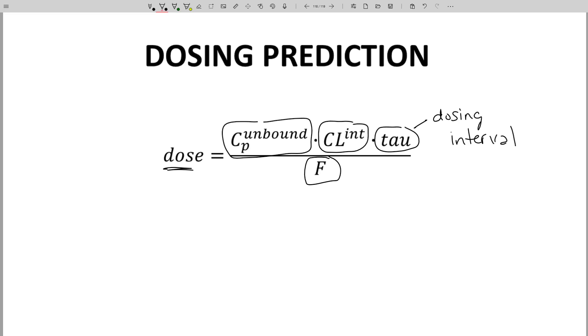Let's walk through these variables quickly. CP unbound is the concentration that we feel is necessary for therapeutic activity. This is a therapeutic concentration.